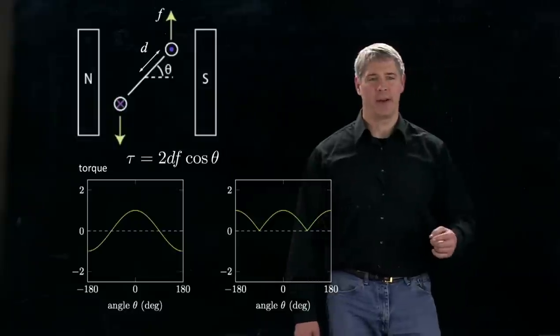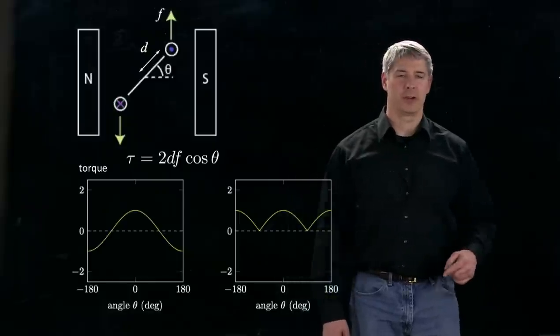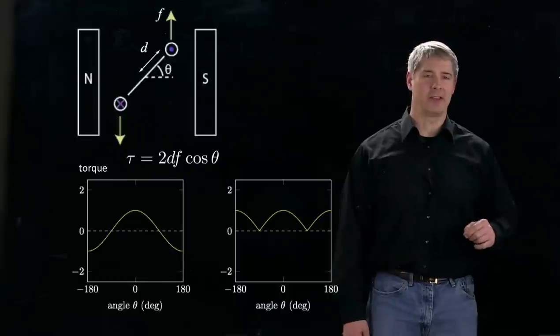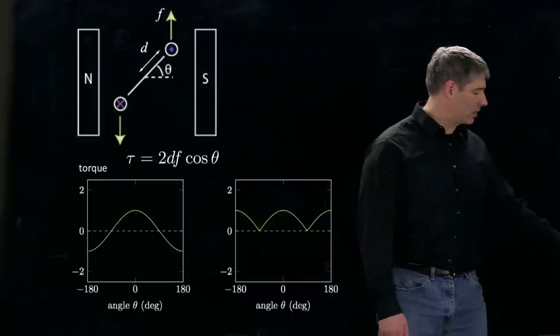Now imagine instead of having that one loop through the magnetic field, we had three loops and those three loops were offset from each other by 120 degrees, and each of them had their current switched at the right angle. Then we'd get something that looks like this.